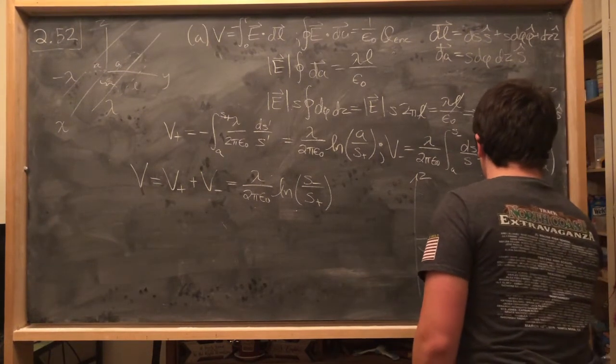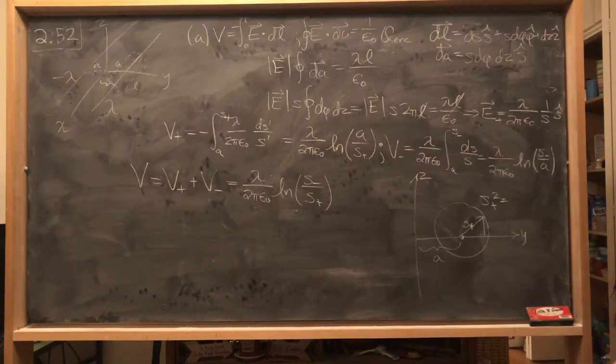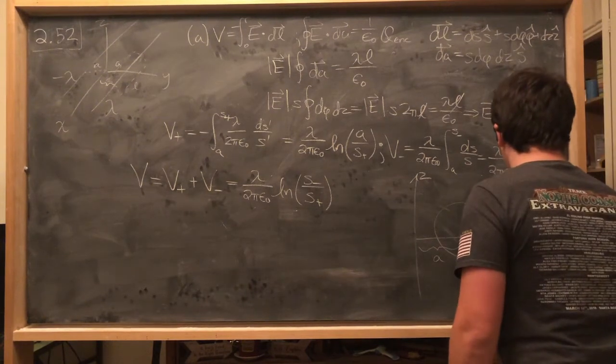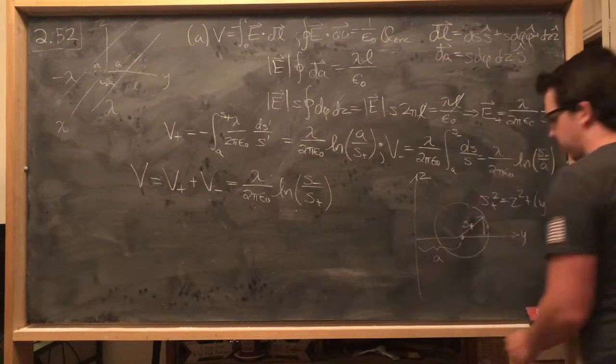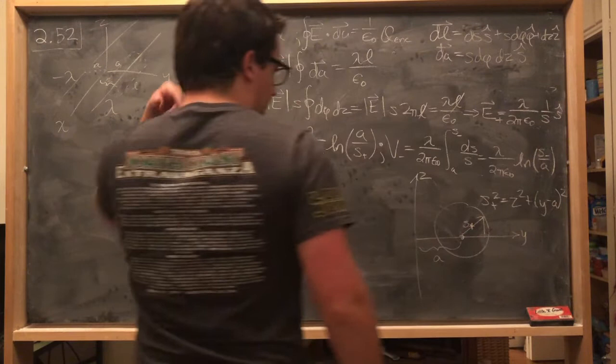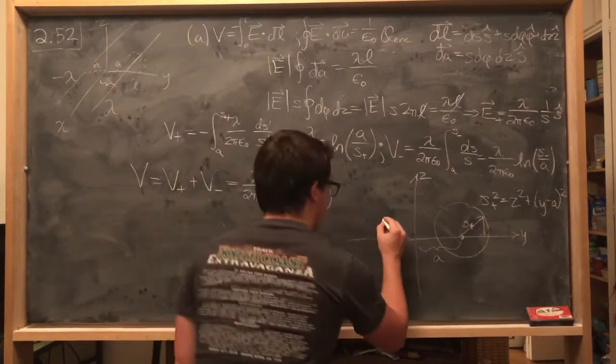And so it's not hard to see that if you draw a triangle here, that S plus squared, just use Pythagorean theorem, and that would be z squared plus y minus a squared to account for the offset from the origin.